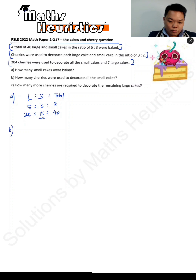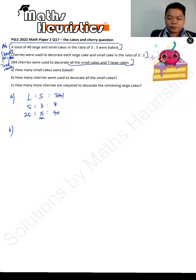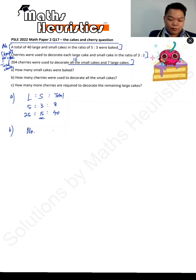For how many cherries were used to decorate all the small cakes, we observe that we are given statements on the number of items, the number of cherries per item — cherries per cake — and the total number of cherries. We can make use of the number times value equals total value concept, which we cover extensively in our unit transfer method modules and workshops.